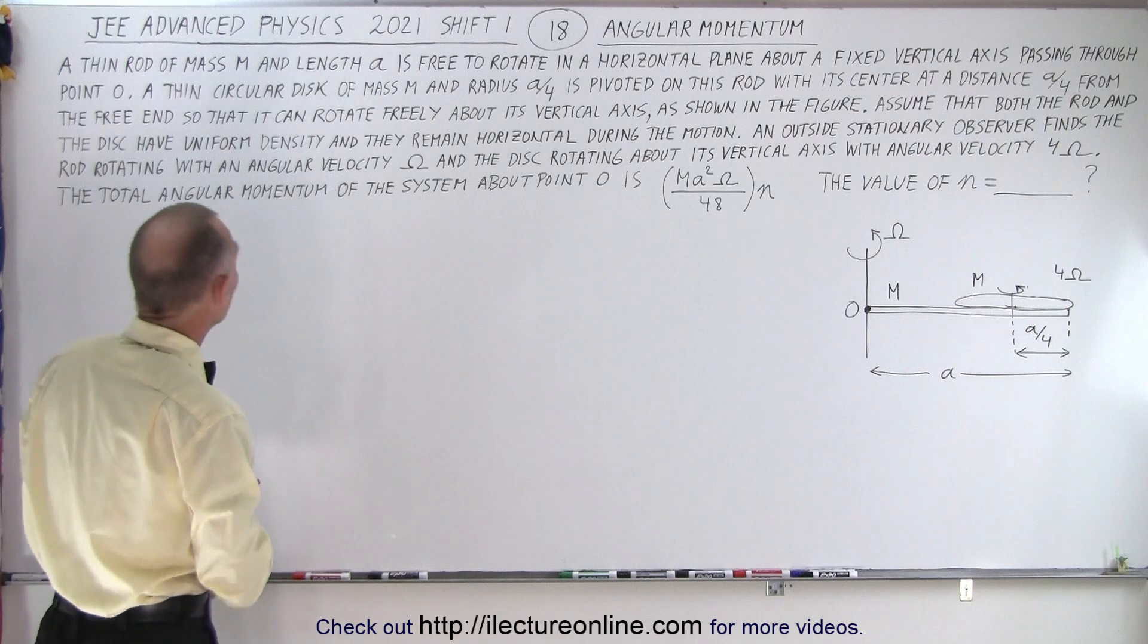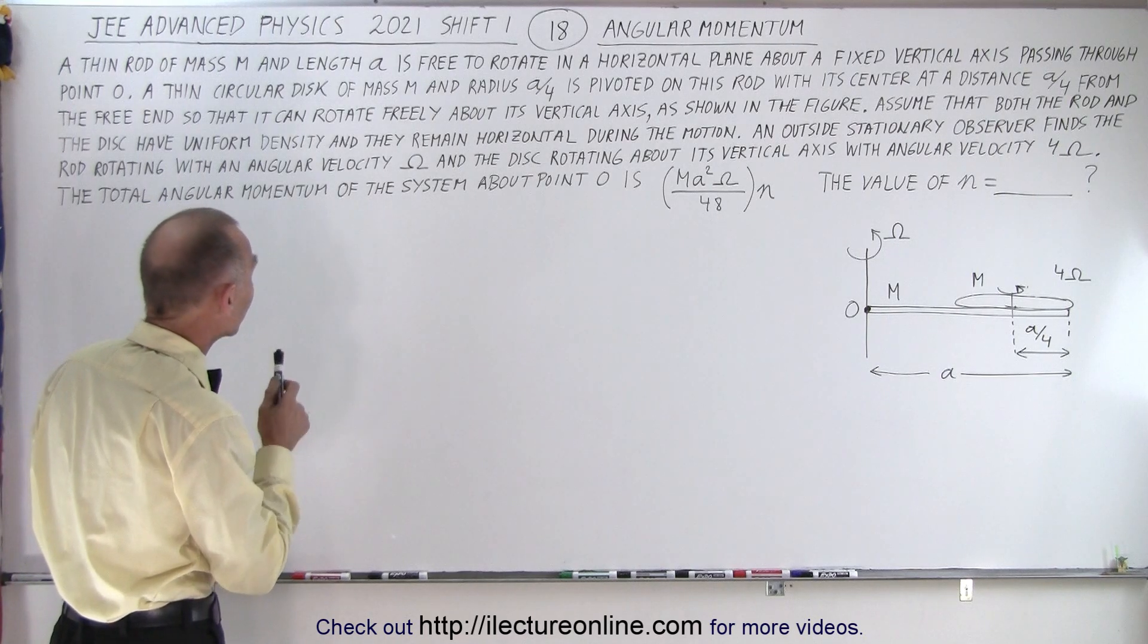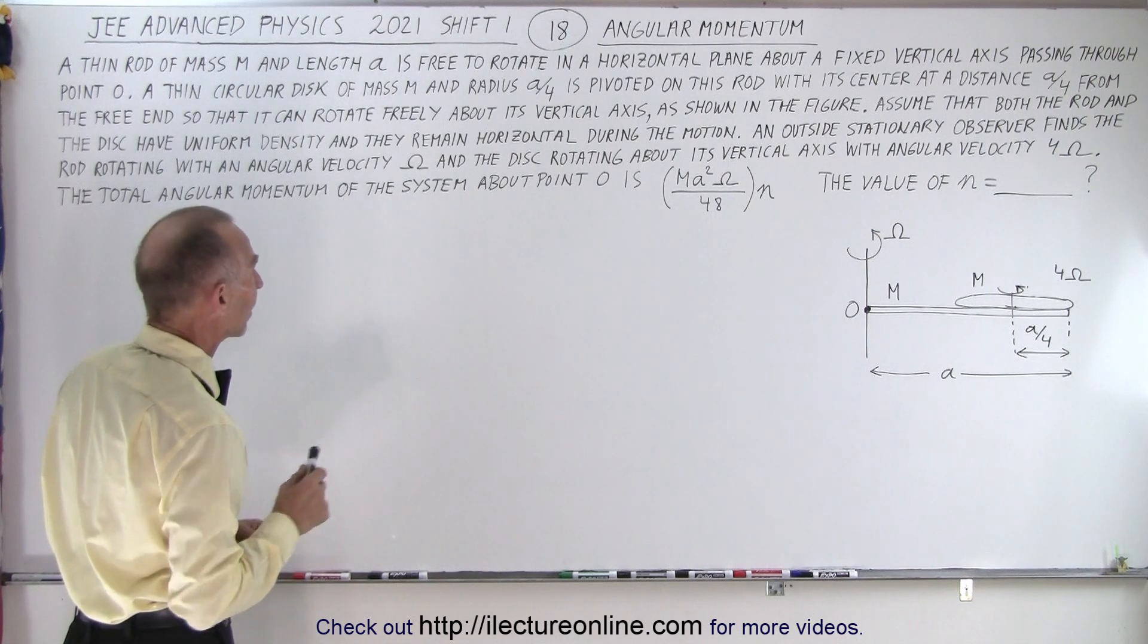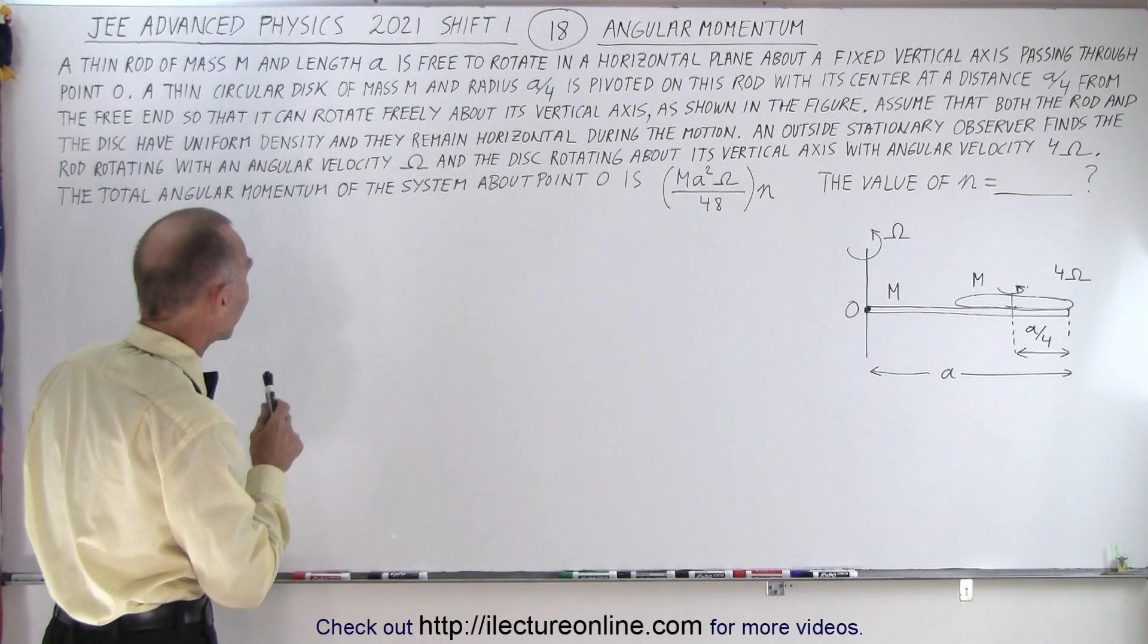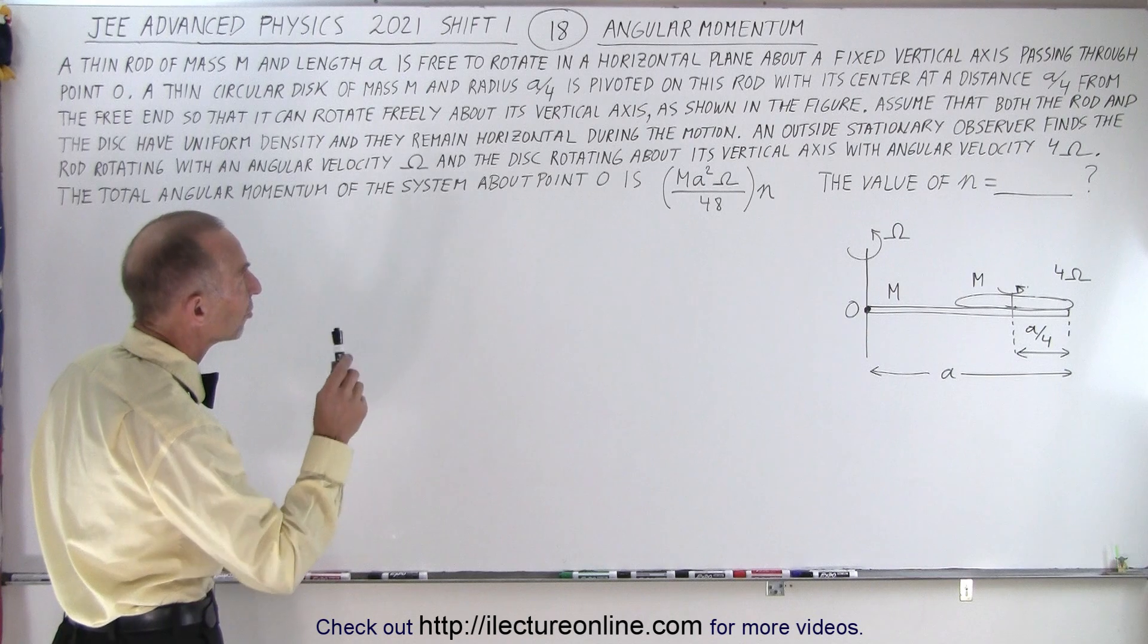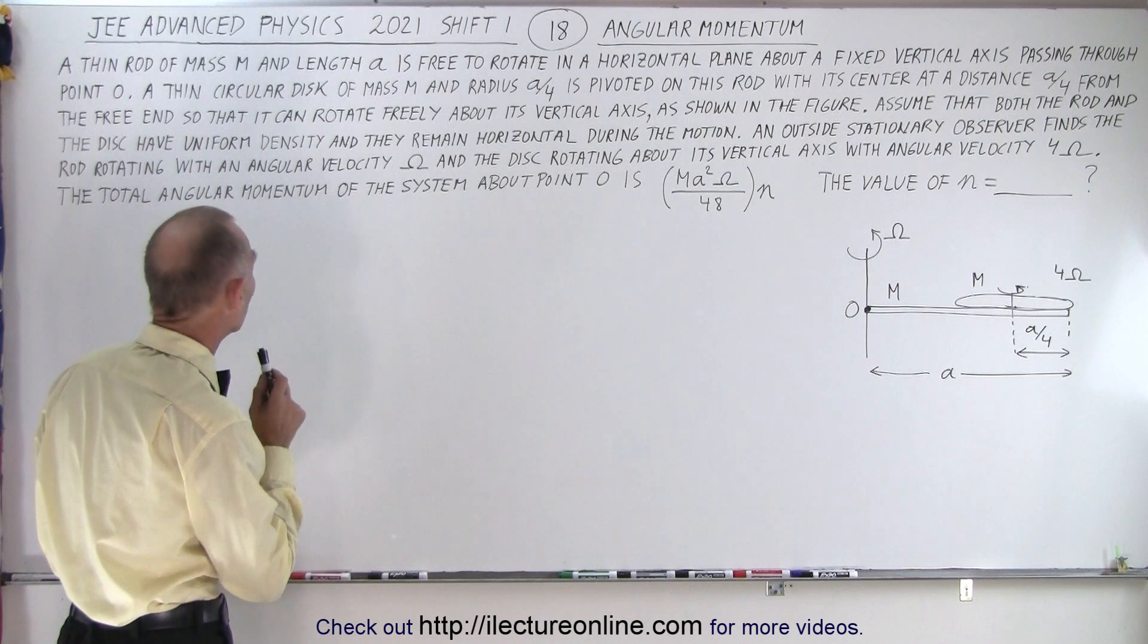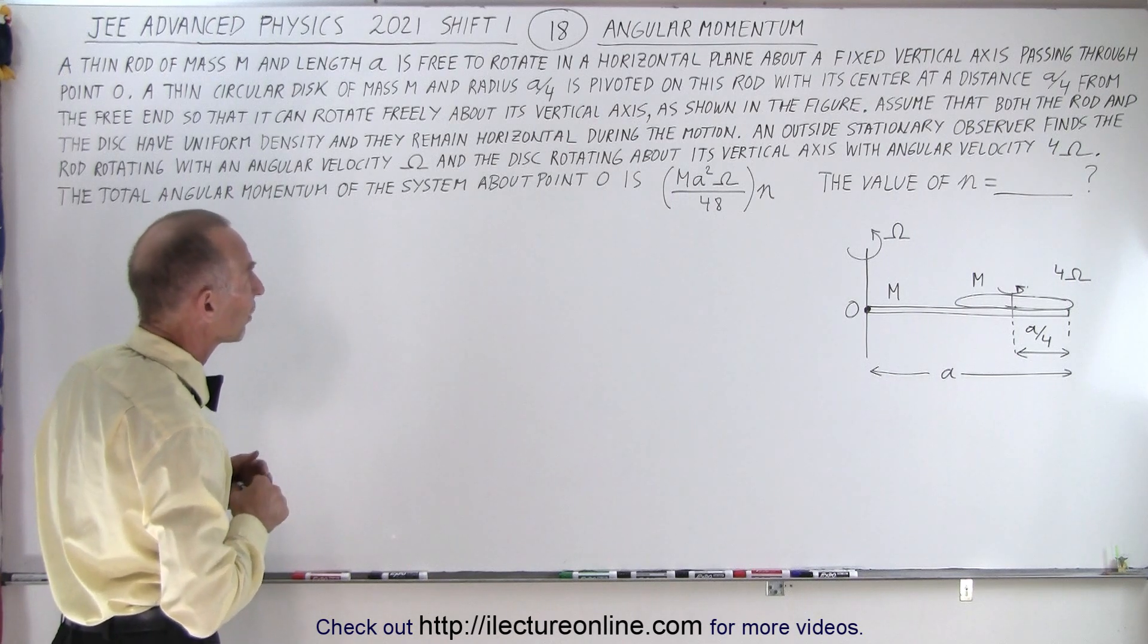It deals with angular momentum, and the problem reads: a thin rod of mass m and length a is free to rotate in a horizontal plane about a fixed vertical axis passing through O. A thin circular disk of mass m and radius a over 4 is pivoted on this rod with its center at a distance a over 4 from the free end so that it can rotate freely about its vertical axis as shown in the figure.